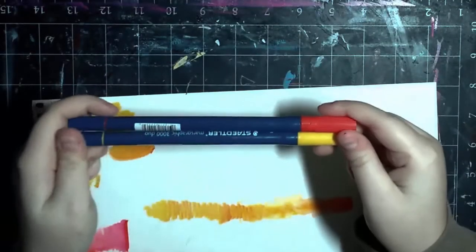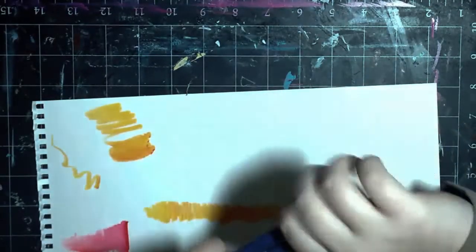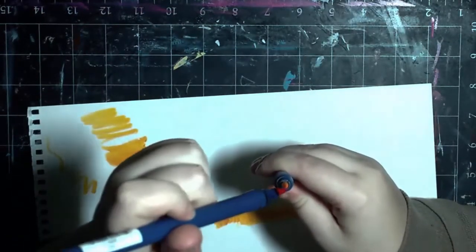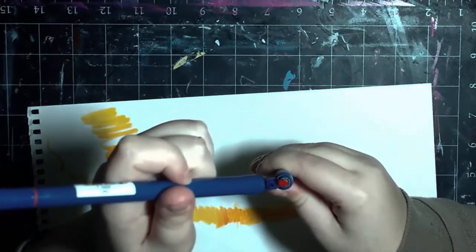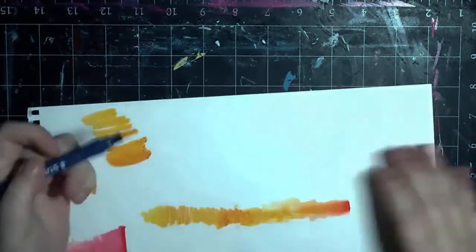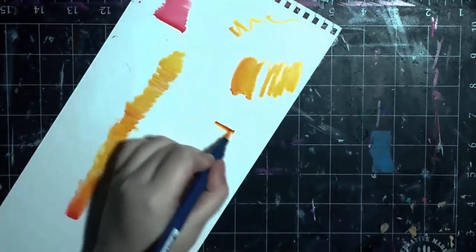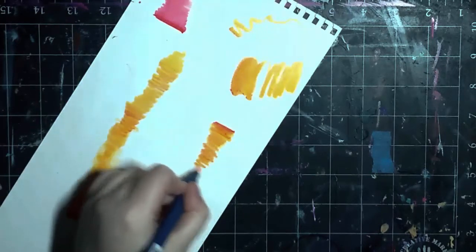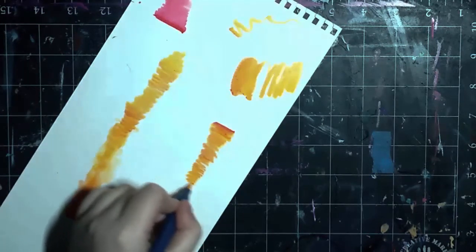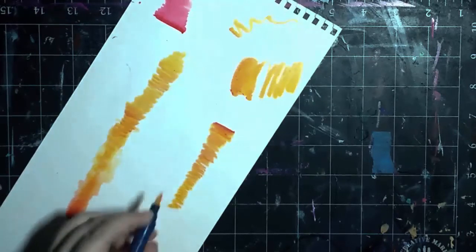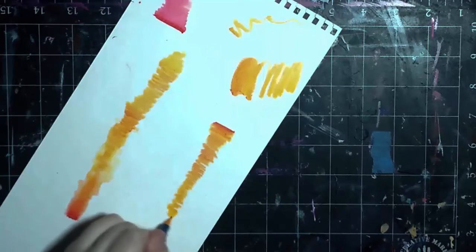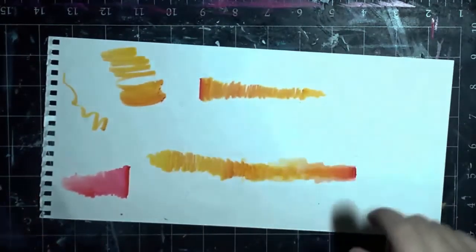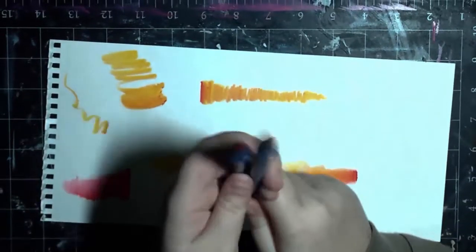And another thing you can do that I didn't mention is that you can take two tips from different colors, and you can actually touch them together for just a little bit, like so. And then you can use them, and you can get a gradient effect out of it.